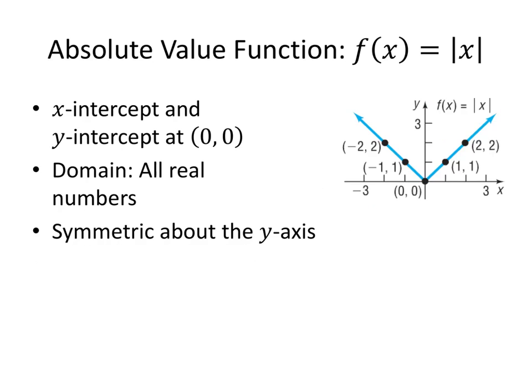Finally, we have the absolute value function, f of x equals the absolute value of x. If we plug a positive number into the absolute value, nothing happens, but if we plug a negative number in, the absolute value gets rid of the negative. For example, the absolute value of 2 is 2, but the absolute value of negative 2 is positive 2. This graph has x-intercepts and y-intercepts both at the origin. The domain is all real numbers, and the graph is symmetric about the y-axis — if we were to flip it over, the left side would get flipped onto the right side and vice versa.